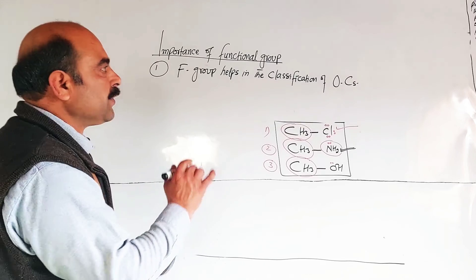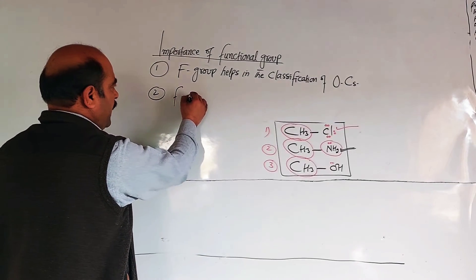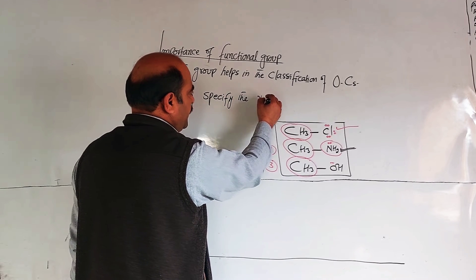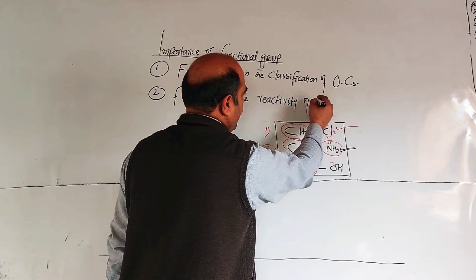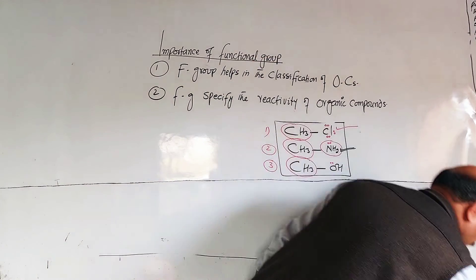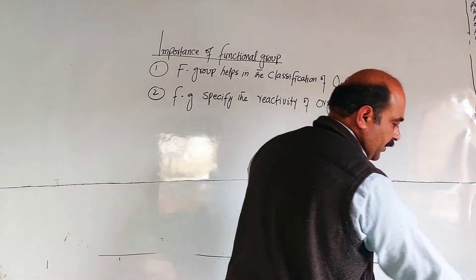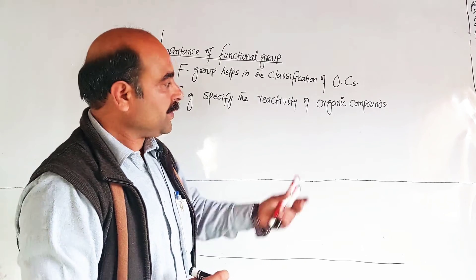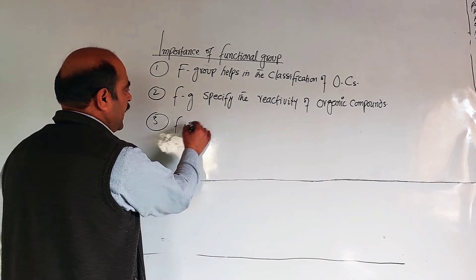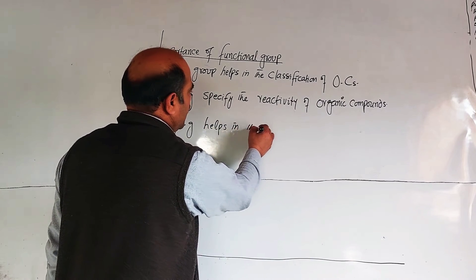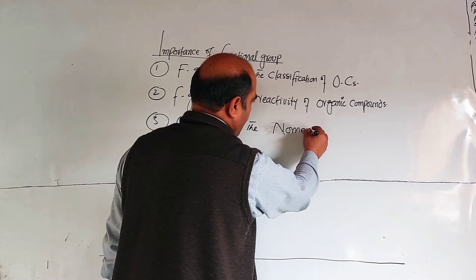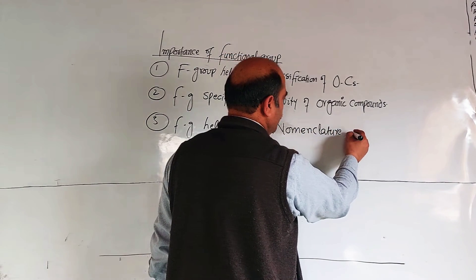The functional group specifies the reactivity and chemical properties of organic compounds. It helps determine what reaction a compound will undergo and what product will form. The functional group also helps in the classification and nomenclature of organic compounds.